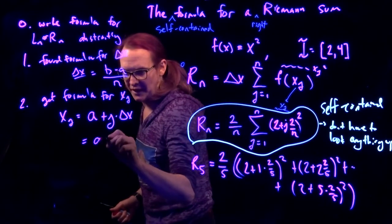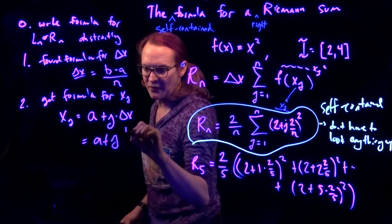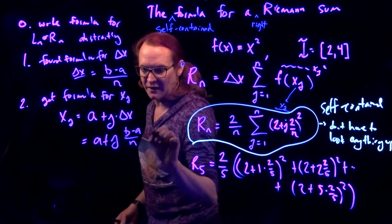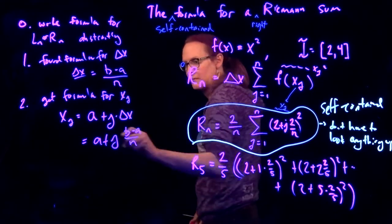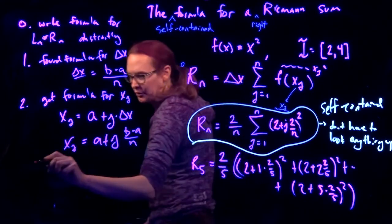Well, that's just equal to a plus j times b minus a over n. Three?